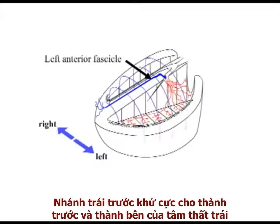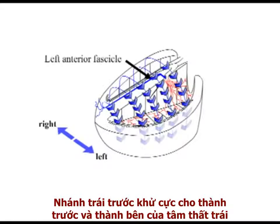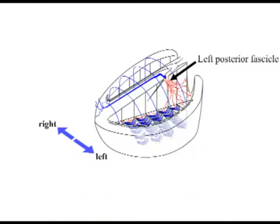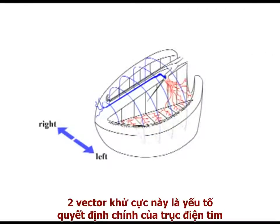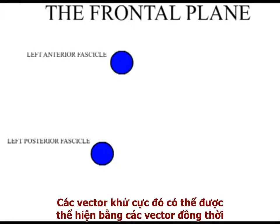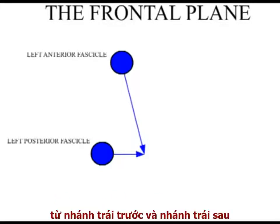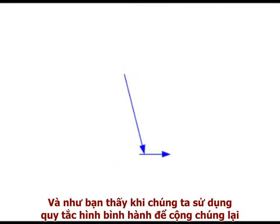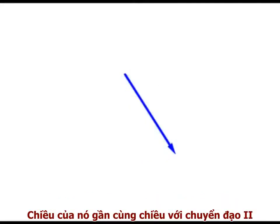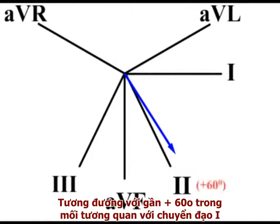The left anterior fascicle depolarizes the anterior and lateral walls of the left ventricle, while the left posterior fascicle simultaneously depolarizes the posterior and inferior surfaces of the chamber. In a normal heart, these two depolarizing vectors are the prime determinant of the cardiac axis. As shown here, in the frontal plane, they can be represented as vectors flowing simultaneously from the left anterior fascicle and from the left posterior fascicle. When we use the parallelogram rule to add them together, the total vector generated is traveling downwards and to the left — more or less straight down lead 2 — at approximately 60 degrees relative to lead 1.